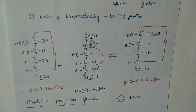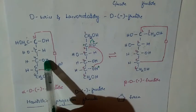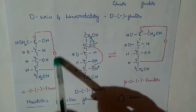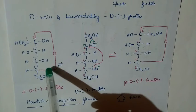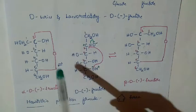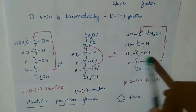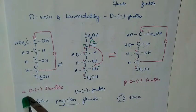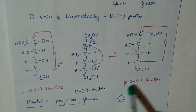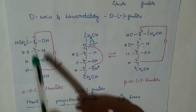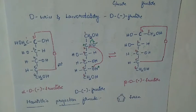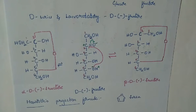Good morning to all. In yesterday's class, we discussed Fischer's projection formula in the form of cyclic structure. So the cyclic structure of fructose was given, with two forms: alpha D-minus fructose and beta D-minus fructose. The second carbon is bonded to the fifth carbon through an oxygen atom, forming a hemiketal.